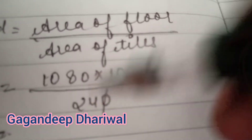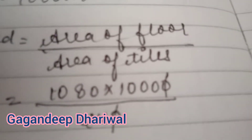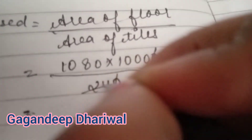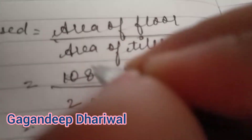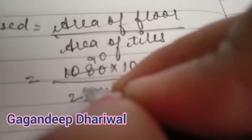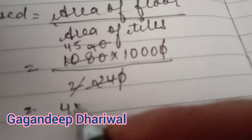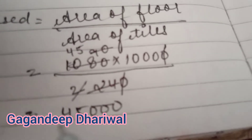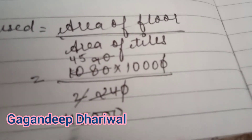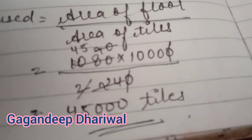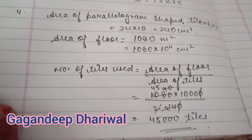Simplifying, 12 is common: 12 twos are 24, and 12 nines are 108. Further dividing gives 45,000. So 45,000 tiles are required to cover this flooring. That is your answer.